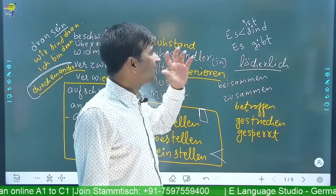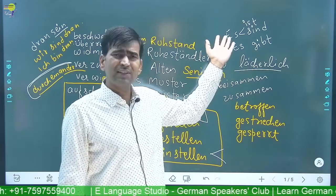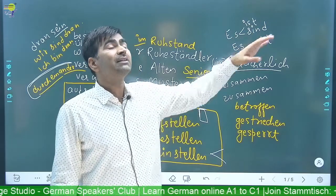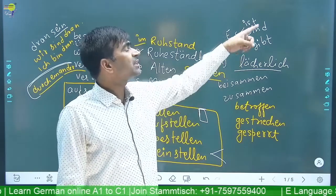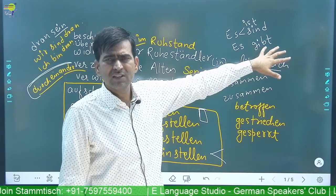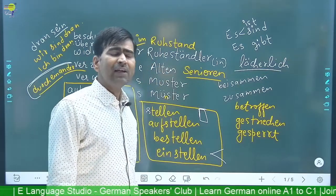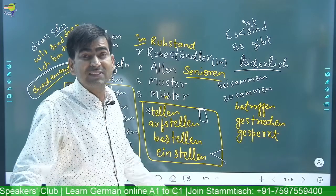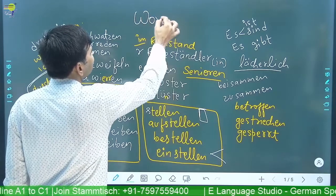Es sind and es gibt — they also sound the same normally. There is / there are — but es gibt is especially for numbers. Es gibt sieben Freunde — there are seven friends. You can also say es sind sieben Freunde. But es sind use karte hain — and this is general, for anything. Wir sind — also iss mein Mitglieder — es gibt Mitglieder.